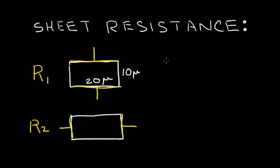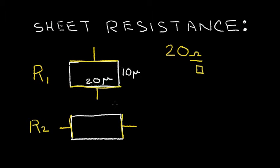Let's presume that the resistivity or the sheet resistance of this material is 20 ohms per square. I want you to calculate the value of resistor R1 and R2. Put the video on pause and then come back and I'll give the solution.